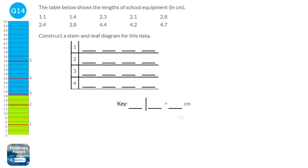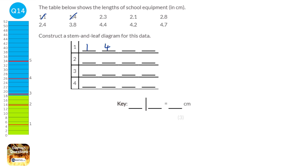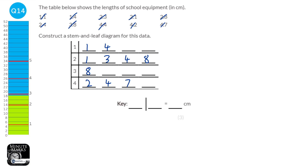A stem and leaf diagram is a way of showing raw data. This 1 here represents 1 because looking at the data they're all 1-point-something, 2-point-something, 3-point-something, or 4-point-something. So we have 1.1 and 1.4 in the 1s; 2.1, 2.3, 2.4, and 2.8 in the 2s; 3.8 in the 3s; and 4.2, 4.4, and 4.7 in the 4s. In the key, we say 1 line 1 means 1.1 centimetres.